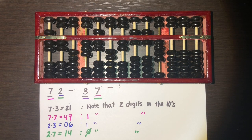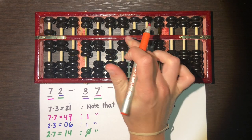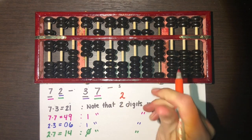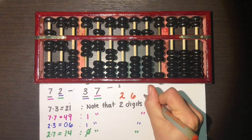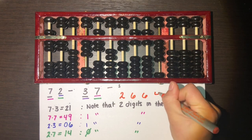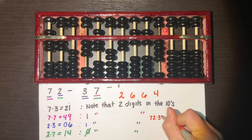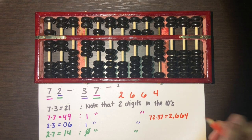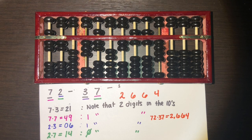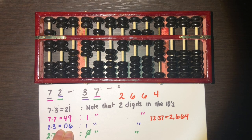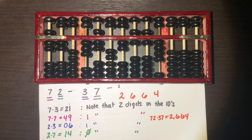Now all that's left is to read our number. At our starting spot we have two, then to the right we have 6, 6, and 4. So 72 times 37 equals 2,664. That is how you multiply using an abacus for two two-digit numbers. I can't emphasize enough that you have to watch out for scenarios where you need to put a zero in — all one-digit times one-digit multiplications should yield a two-digit solution for this method to work. Good luck multiplying!